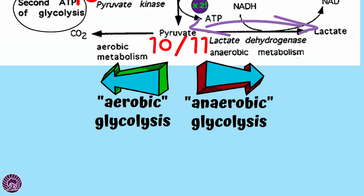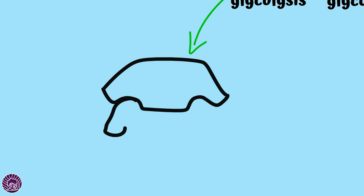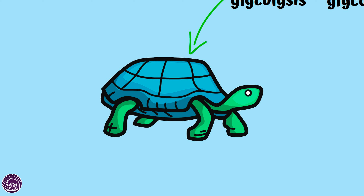Moving to step seven, we see the first production of ATP in glycolysis. We've already lost two ATP, and it's not until step seven that we actually start producing it. Because we're now working with two molecules at each step, we produce two molecules of ATP here — you can almost think of two arms of glycolysis proceeding in parallel. Then at step ten — the conversion of phosphoenolpyruvate to pyruvate — two more molecules of ATP are produced. So we've now produced four molecules of ATP from glycolysis.